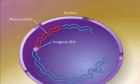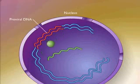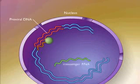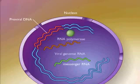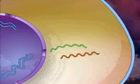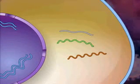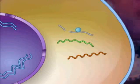Following integration, the proviral DNA may remain dormant or, with host cell activation, RNA may be synthesized from the DNA, yielding messenger RNA and viral genome RNA. Viral messenger RNA is translated, yielding viral enzymes and structural proteins. Some of the functional proteins are formed by cleavage of a long polyprotein by the enzyme protease.